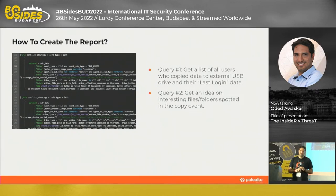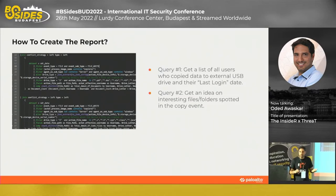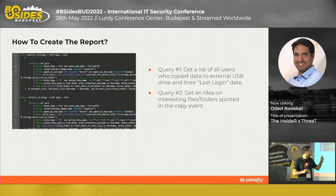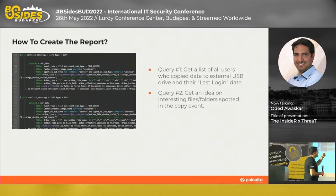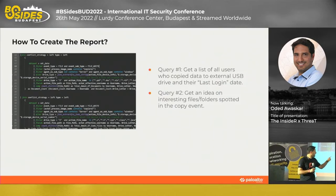So how do we create those types of reports? We're going to use two queries. In this screenshot you can see an XQL query — XQL is a proprietary language of Palo Alto Networks, but you can use any EDR you own, whether it's Splunk, CrowdStrike, or anything similar. The first query gets a list of all users who copied data to an external USB drive and did not have an observed login for the last 45 or 90 days — you can adapt it to any duration. This is what we call the lead generation query. The second query is about getting an idea of interesting files or folders spotted throughout the copy event.